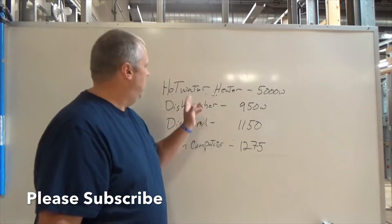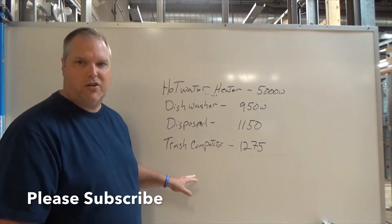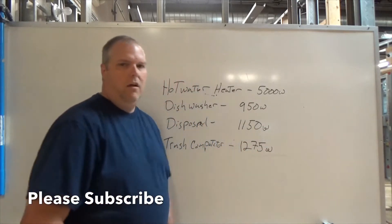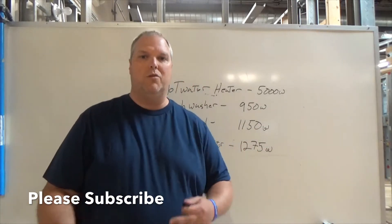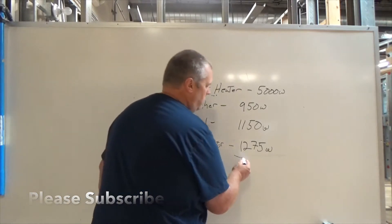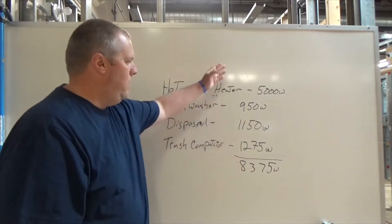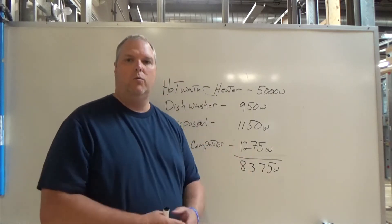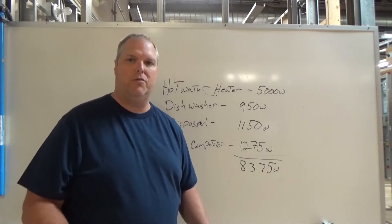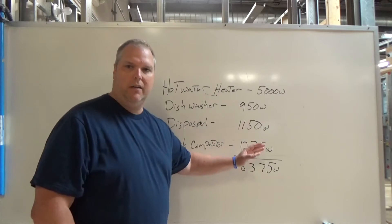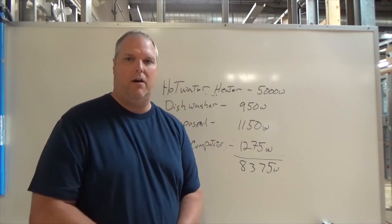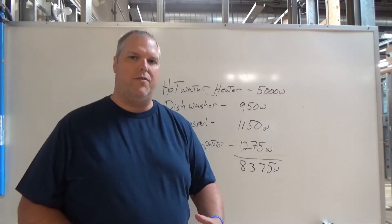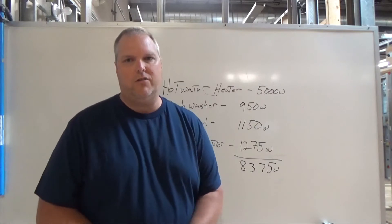On the board I have a hot water heater, a dishwasher, a disposal, and a trash compactor with their wattages listed. When sizing fixed appliances, we add them together. As you can see on the board, when we add these together we get 8,375. When sizing them we're taking them at 100 percent and doing our Ohm's law calculation.